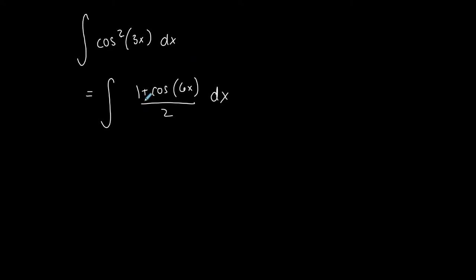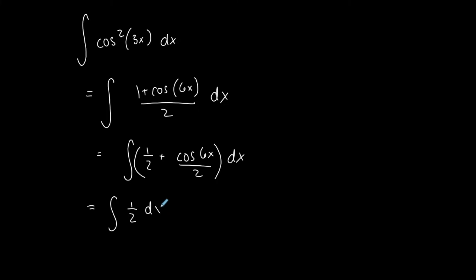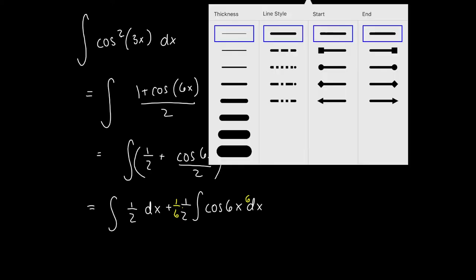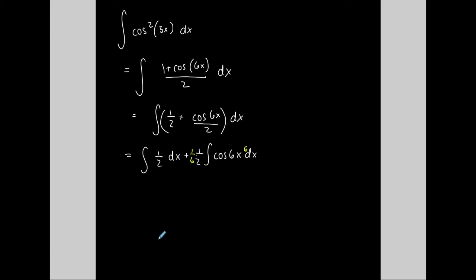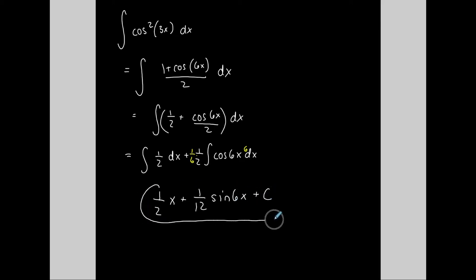Now I can separate this, since there's a monomial on the bottom, into one-half plus cosine of 6x over 2, dx. I separate this into two different integrals and bring the one-half out front. It becomes basic integration. The only thing is cosine of 6x requires an extra 6 for u-sub, so I put a 6 inside and a one-sixth in front. The antiderivative of one-half in x is one-half x, plus one-twelfth times sine of 6x, plus C.